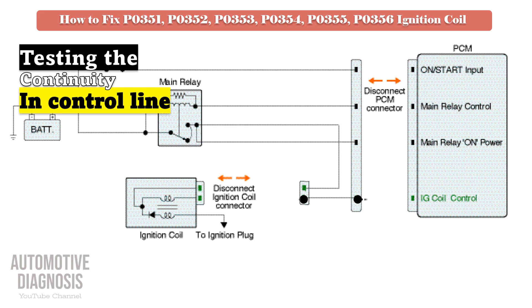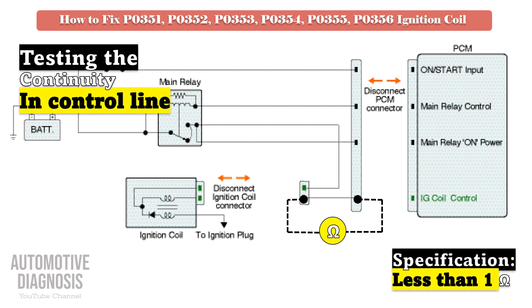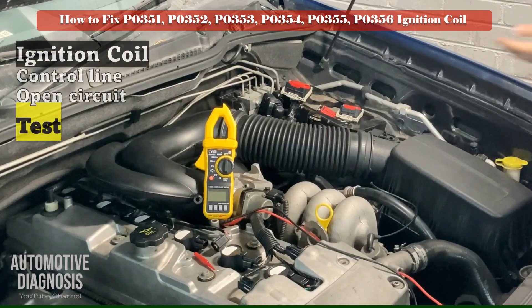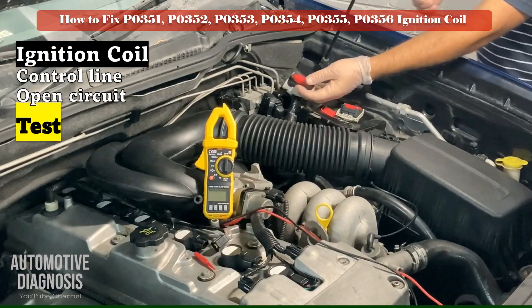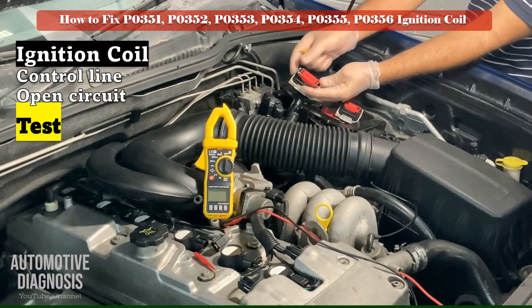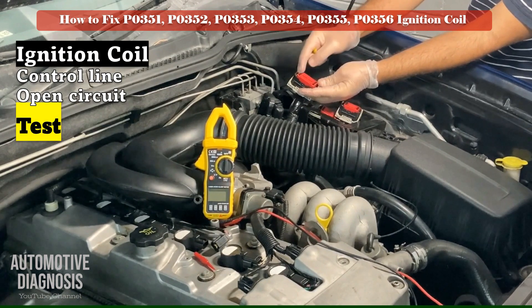For testing the open circuit in the control line, measure the resistance of the control line using a multimeter. Your measurement must be less than 1 ohm.